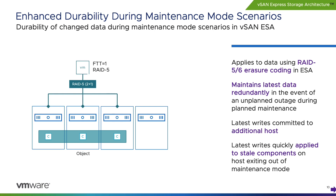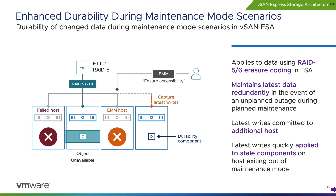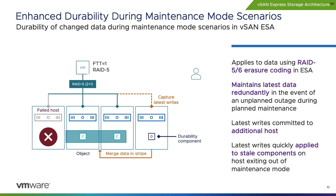With the ESA in vSAN 8 Update 1, we introduce another feature to improve the durability of data during planned maintenance operations. In an ESA cluster, when a host enters maintenance mode using the Ensure Accessibility option, it allows vSAN to write all incremental updates to another host in addition to the host holding the object data in a stripe with parity. This helps ensure the durability of changed data if additional hosts fail while the host in maintenance mode remains offline. Durability components also allow vSAN to merge the updated data more quickly into the stripe with parity, allowing clusters to regain the prescribed level of resilience more quickly during maintenance activities.